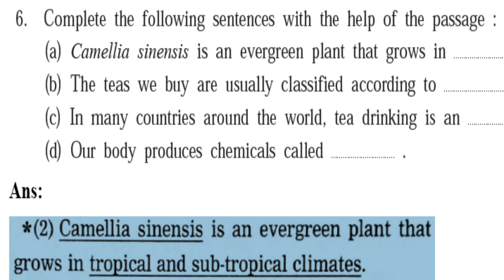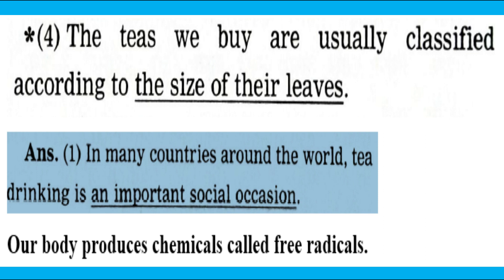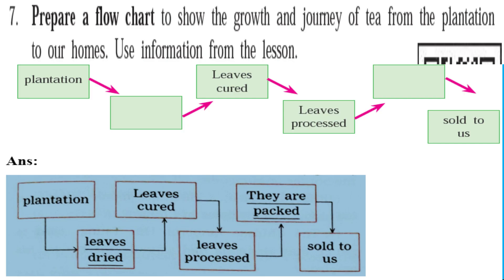Continuing with the sentence completions: In many countries around the world, tea drinking is an important social occasion. Our body produces chemicals called free radicals. Activity seven: prepare a flow chart to show the growth and journey of tea from plantation to our home, using information from the lesson.